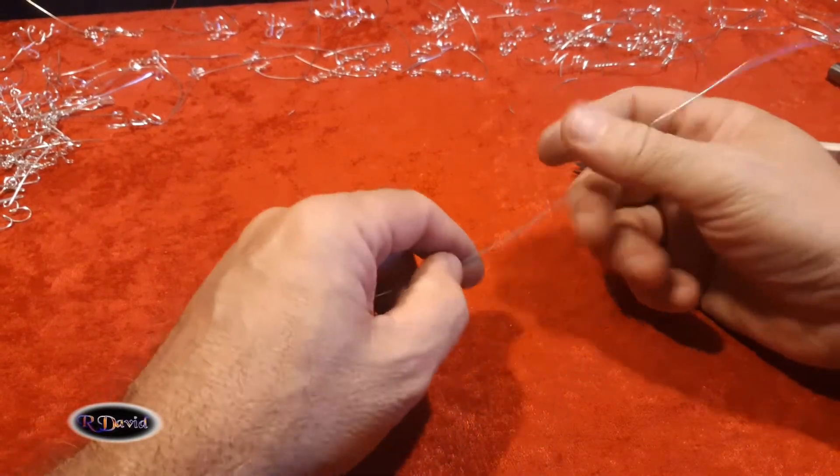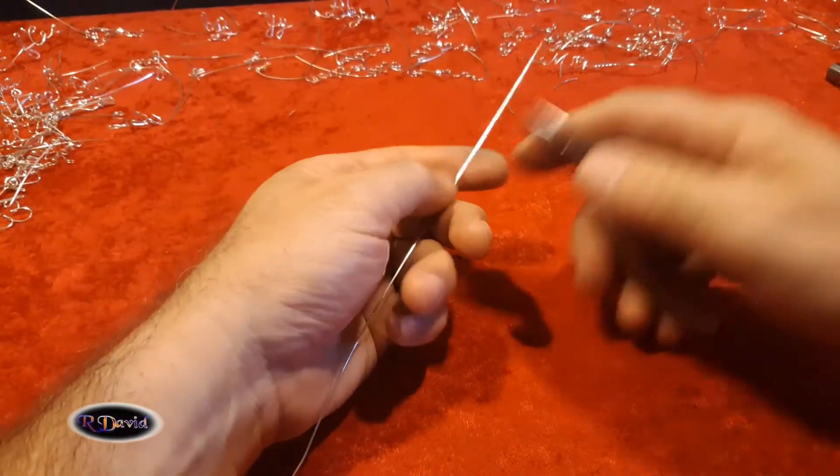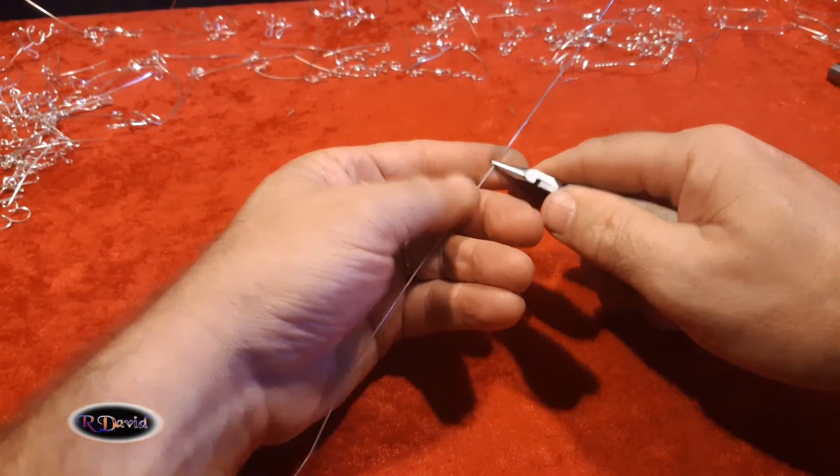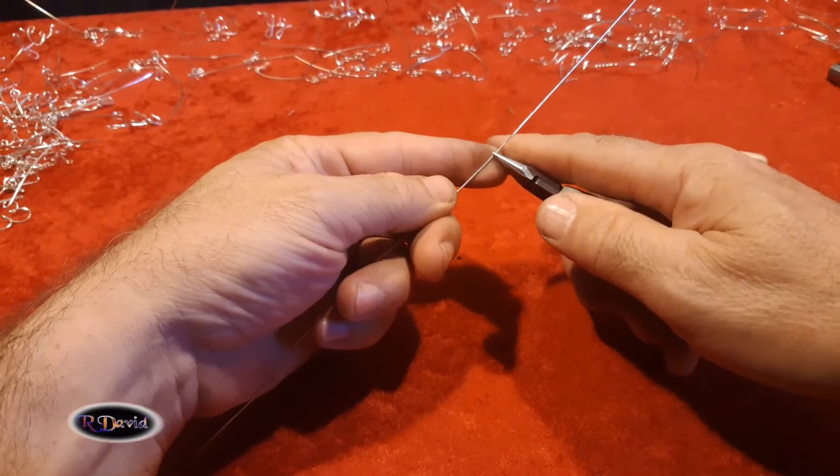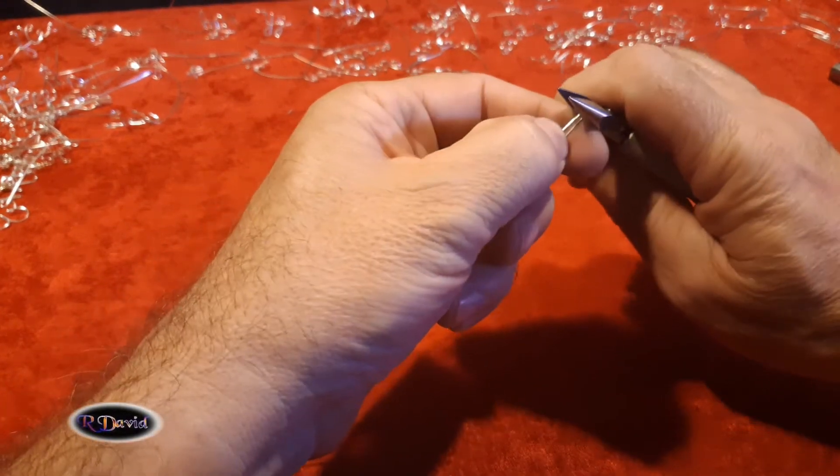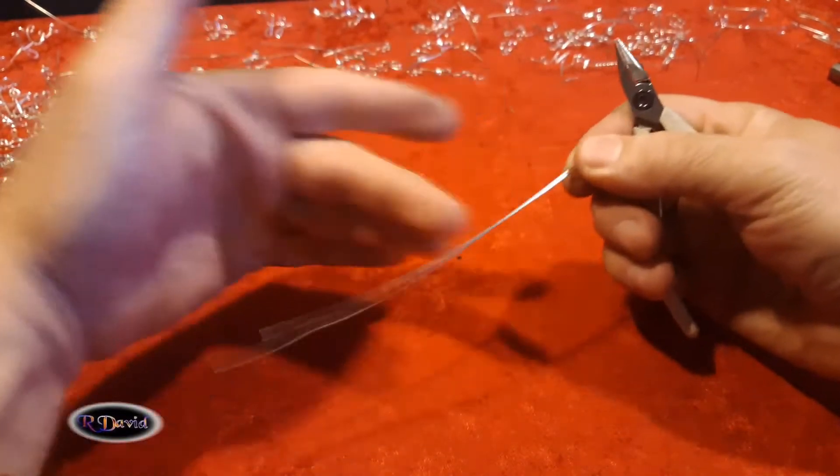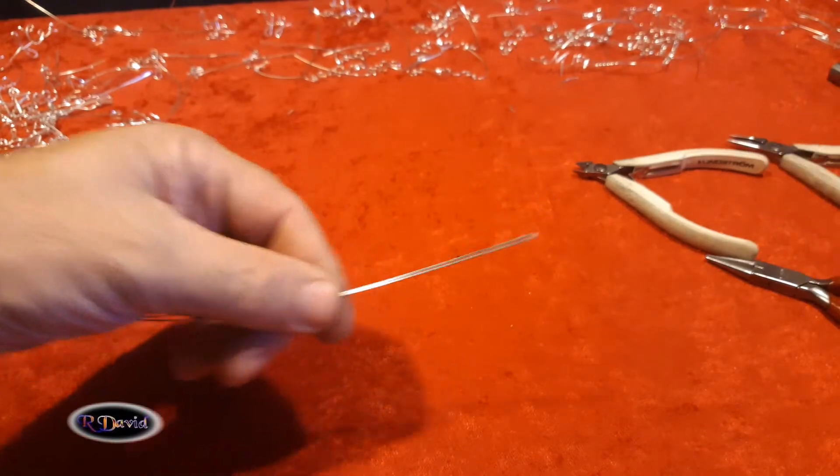As usual, I'm using 21 gauge wire. It is half hard and it is square, sterling silver. I'm going to start dead center of our piece of work here. Fold it over one time. Crimp it. Now you have two sections of wire. Fold it over in the middle. Easy enough.